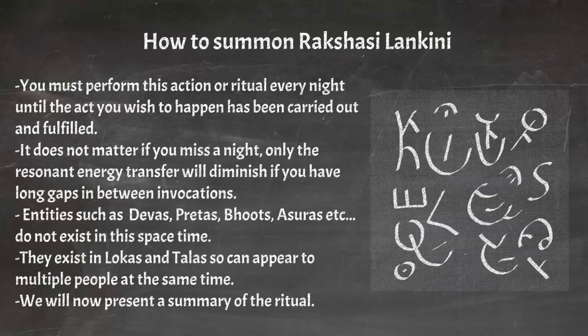There is something that we should mention. Entities such as gods, divas, praethas, bhuts, asurs, etc. do not exist in this space-time. They exist in lokas and talas — other dimensions — and so can appear to multiple people at the same time. Many Aryanist Hindus practice astral projection by entering lokas close to our plane of existence, and thus can be seen by many people in different locations. The same process applies to the entities you will call in this course.